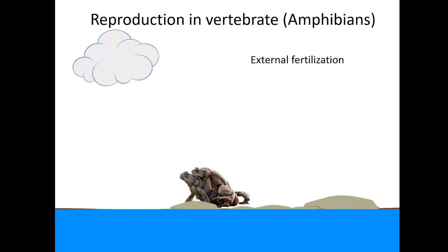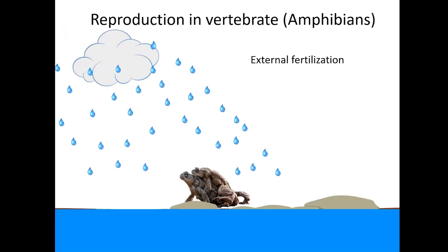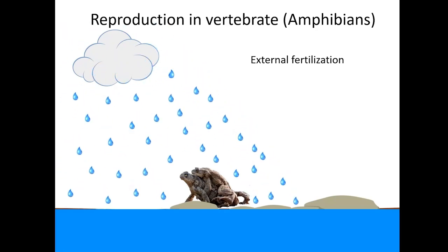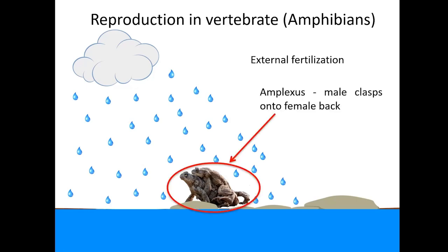Fertilization in amphibians is mostly external. For example, in frogs, during mating season the male produces a croaking sound to attract females. When the female arrives, the male sits on the back of the female — this position is called amplexus. In this position, they release their gametes from the cloaca into the water.